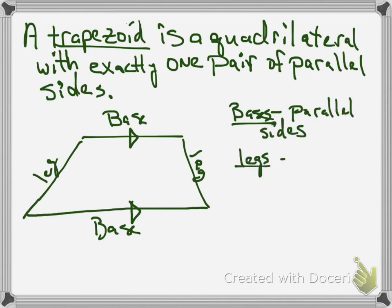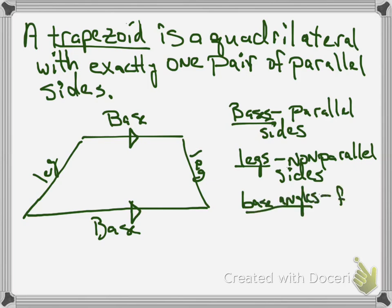Now, there are what are called base angles. If you take a base and a leg, they make an angle, and that would be called a base angle. Technically, there's four base angles.